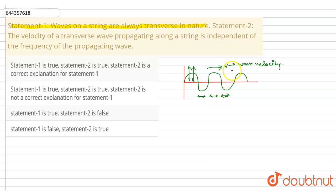So, waves on a string are always transverse in nature. So, statement 1 is true. Now, statement 2 says, the velocity of transverse wave propagating along a string is independent of the frequency of propagating wave.